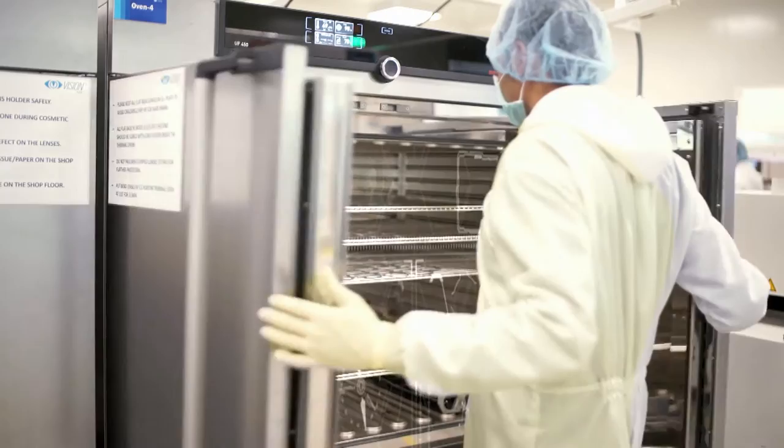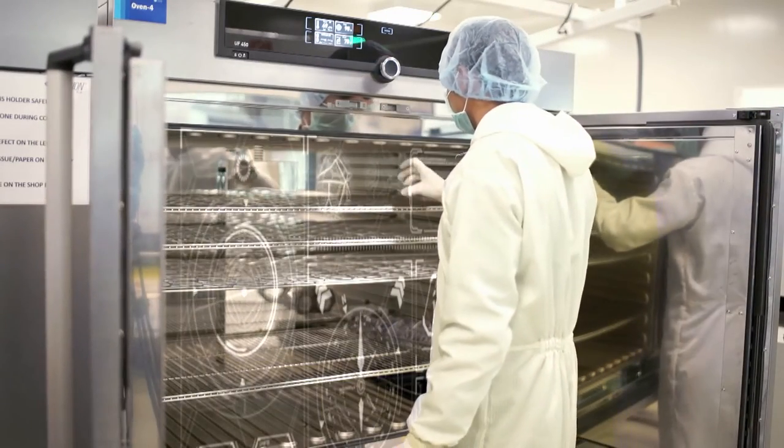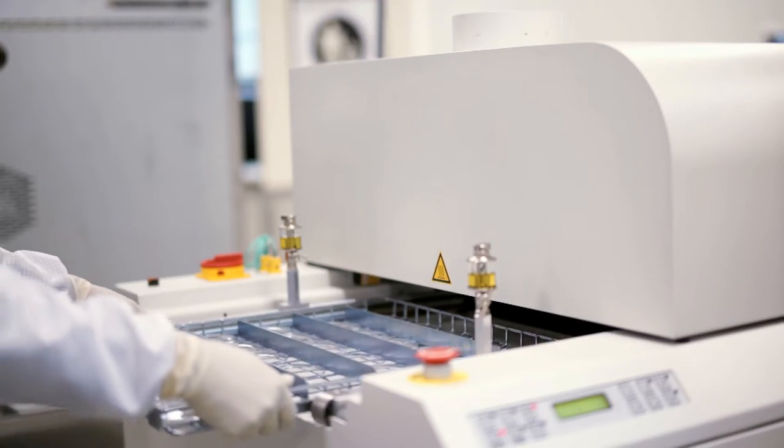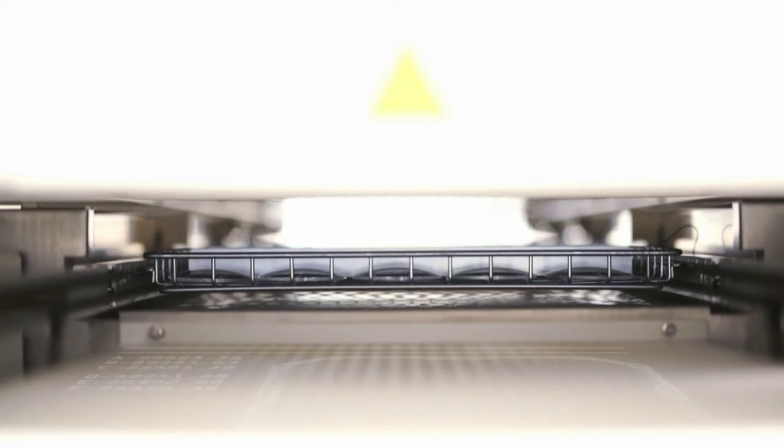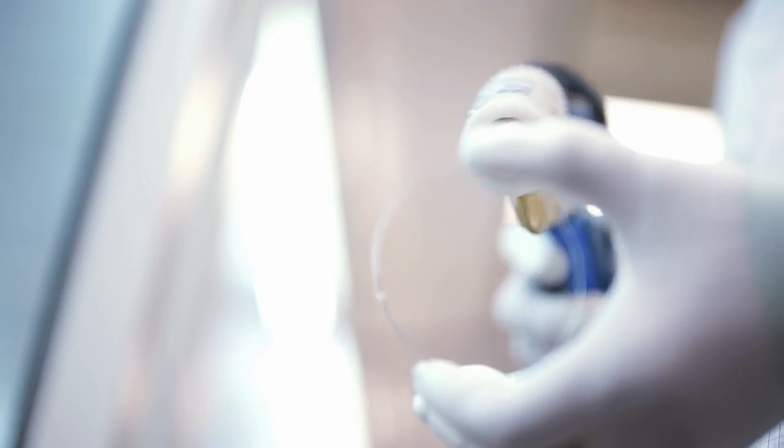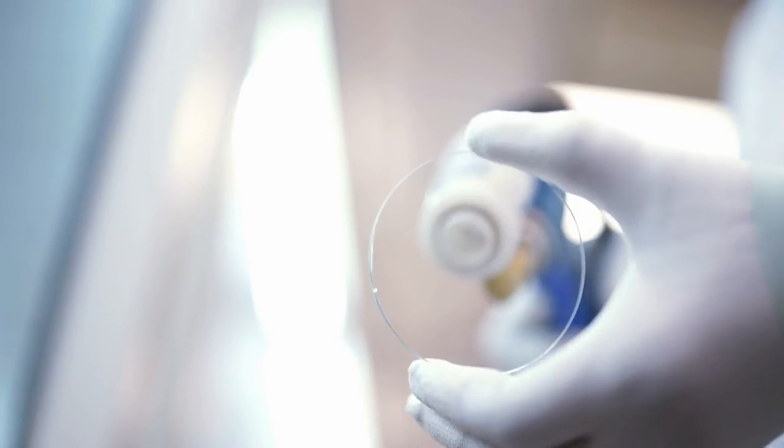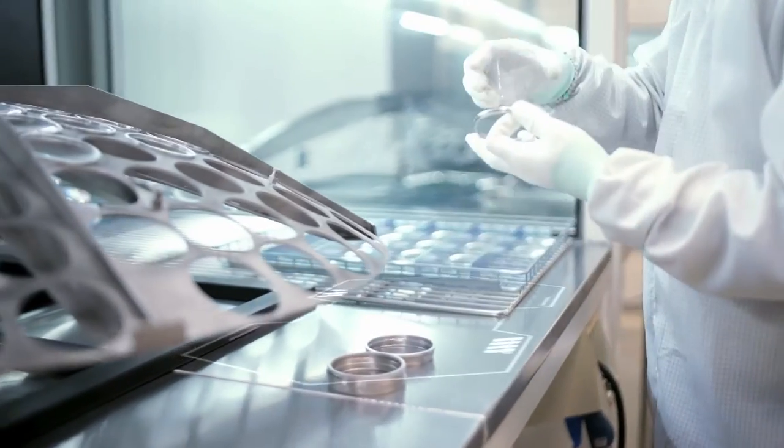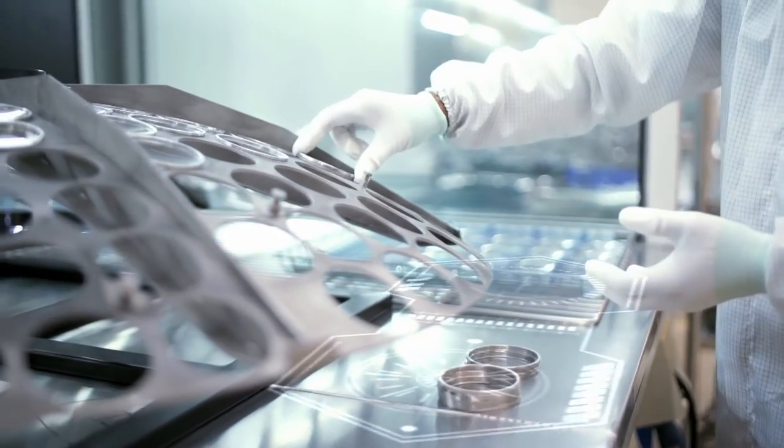And then cured in specific temperature and pressure conditions over a specified time frame. The lab uses lens index-matched varnishes which ensures good compatibility of varnish with lens substrate. After the hard coating process, the lenses undergo cleaning and quality check.